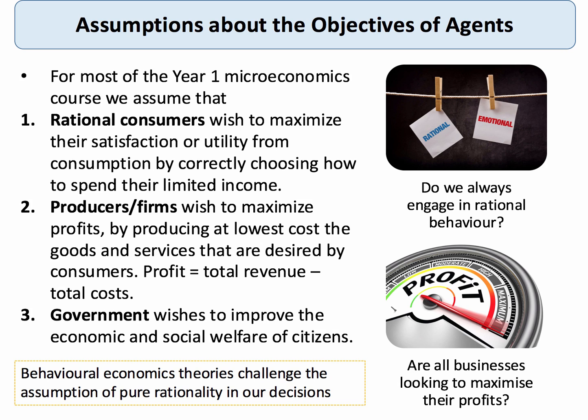For most of the Year 1 Microeconomics course, until you come to challenge this, we assume that we have markets populated by rational consumers. When they're making their choices, they're looking to maximise their total satisfaction or total utility — assuming we can measure that — from their consumption choices, by making correct, rational, well-informed choices about how to spend their limited income, their budget.